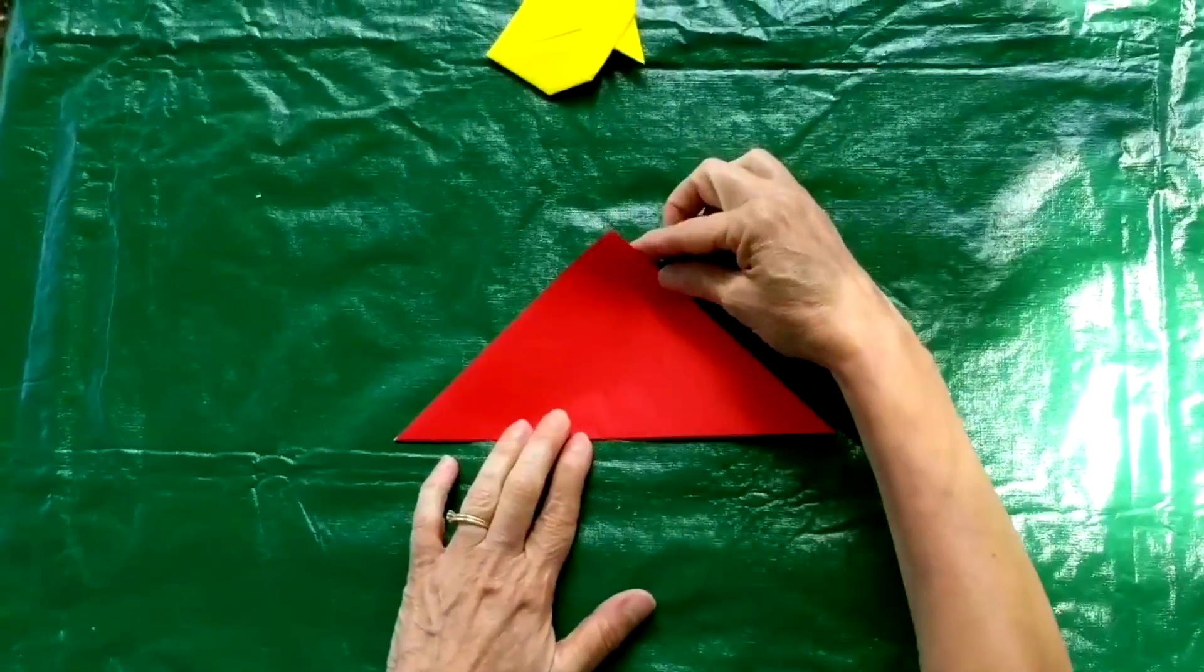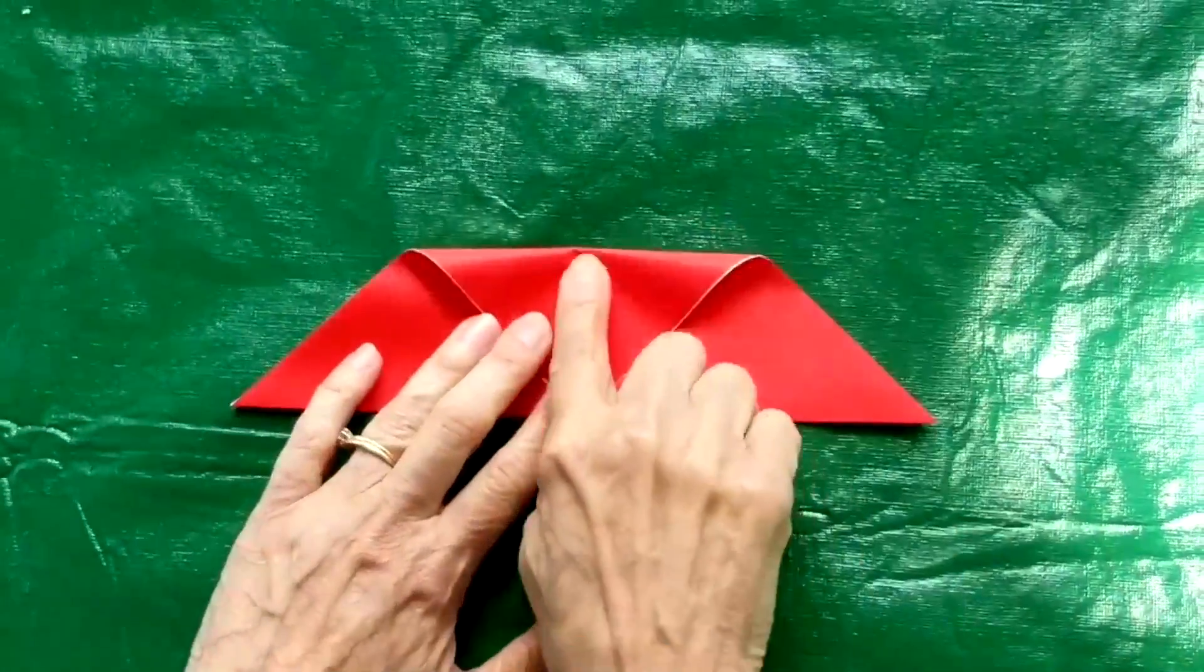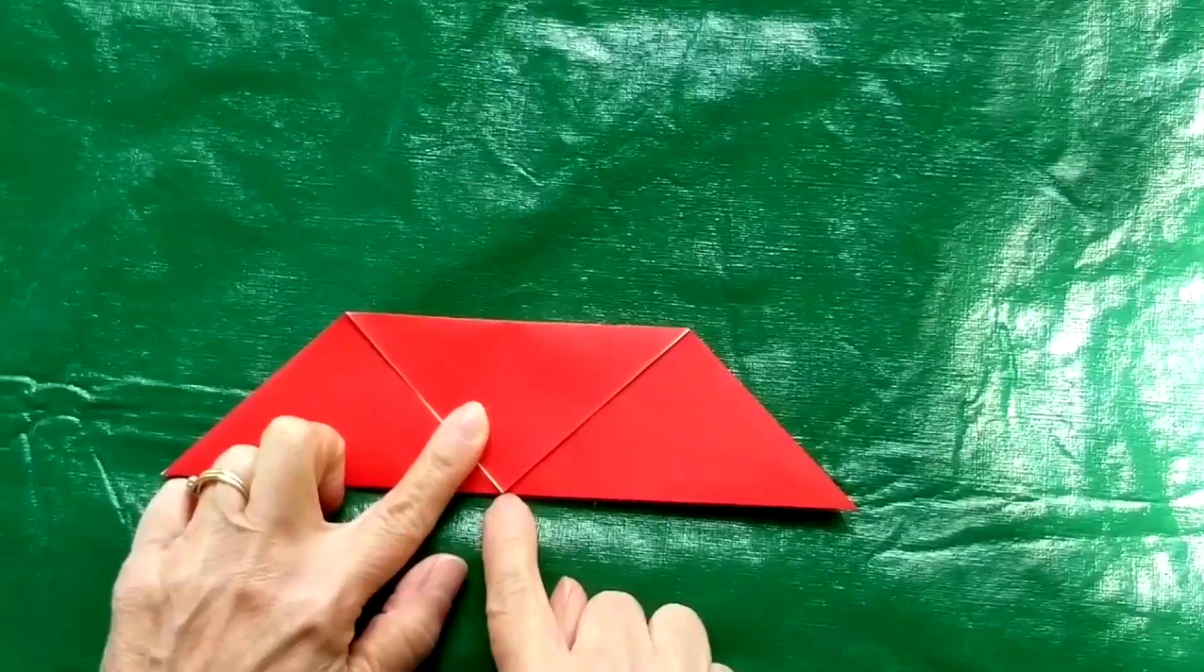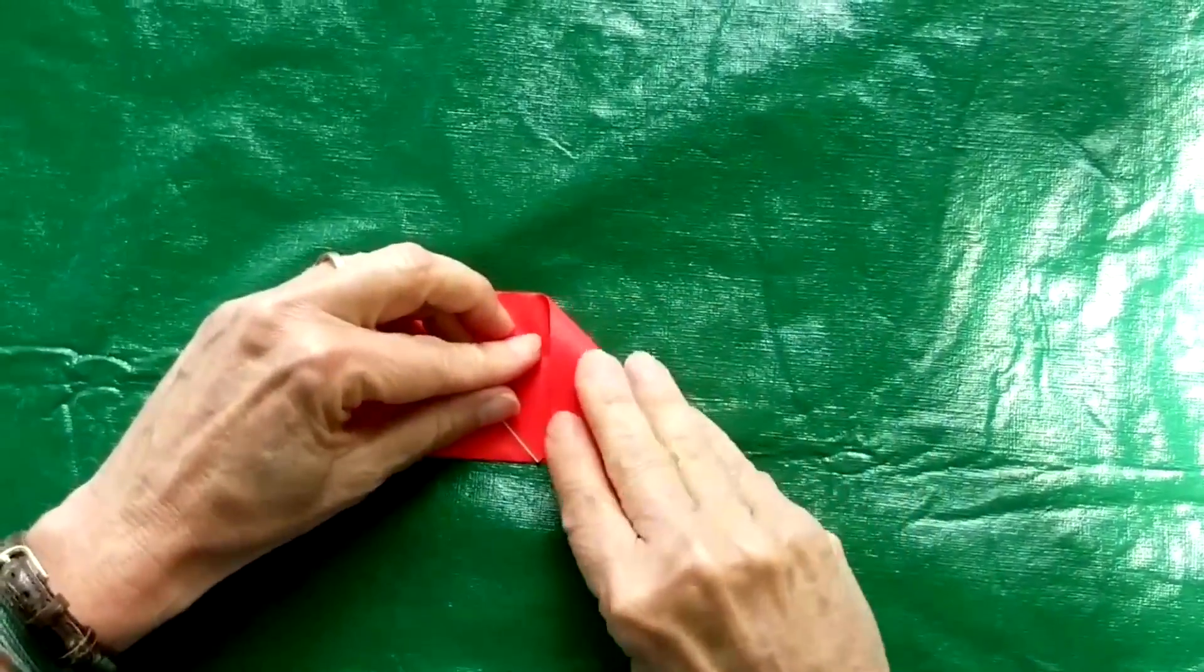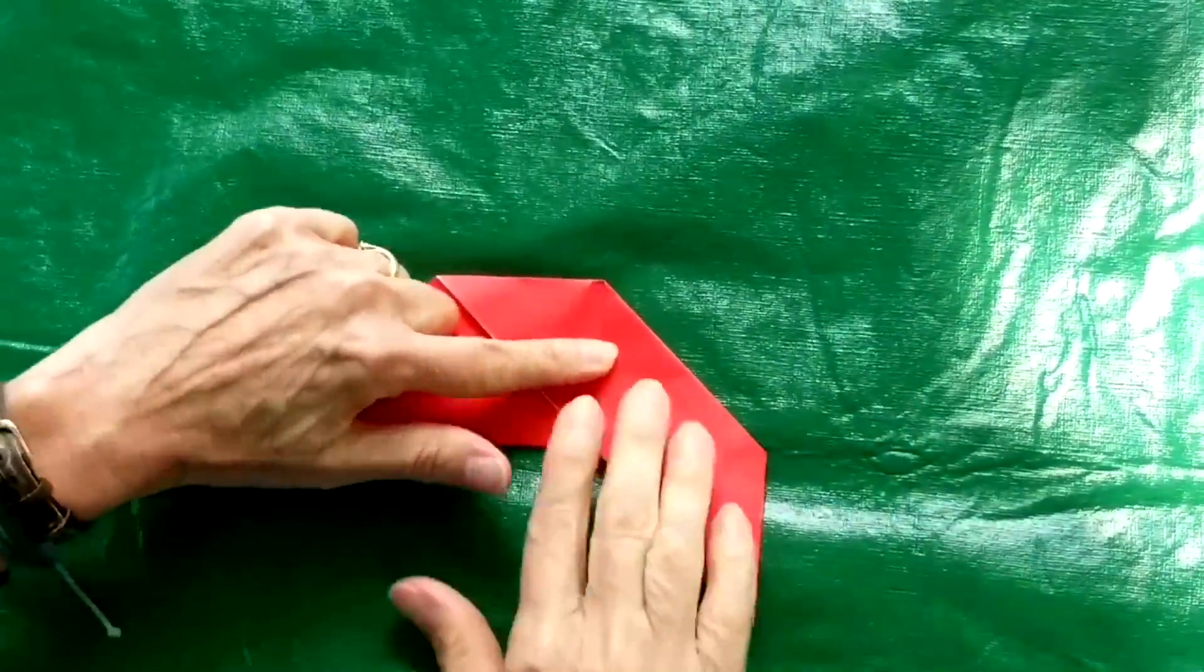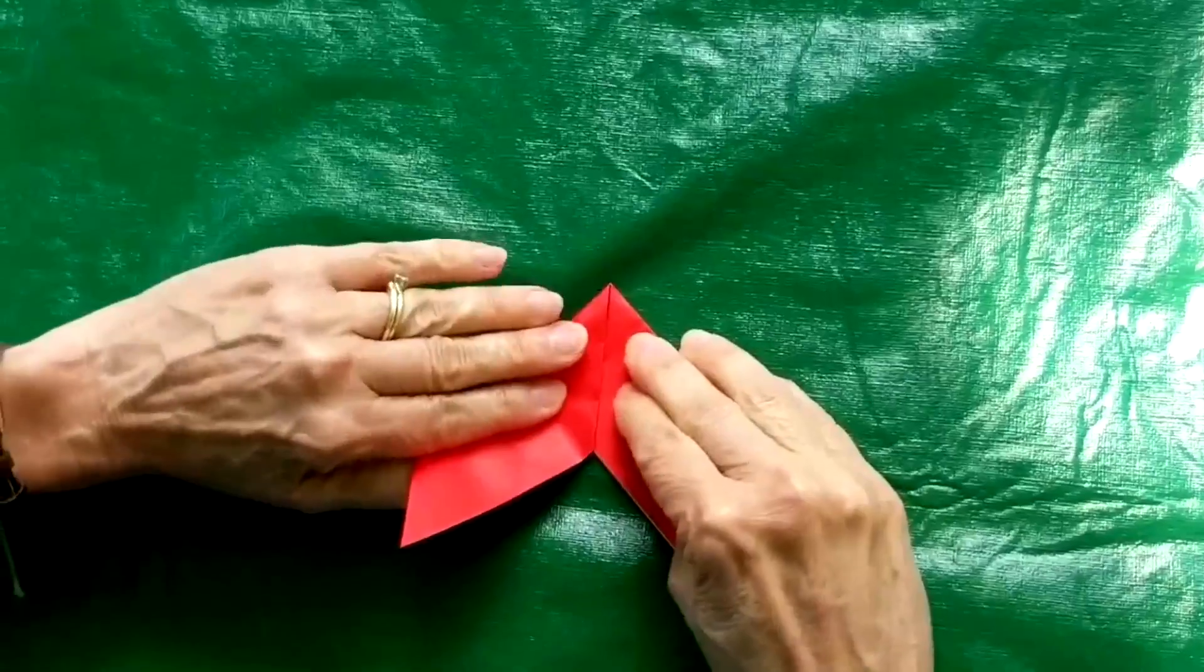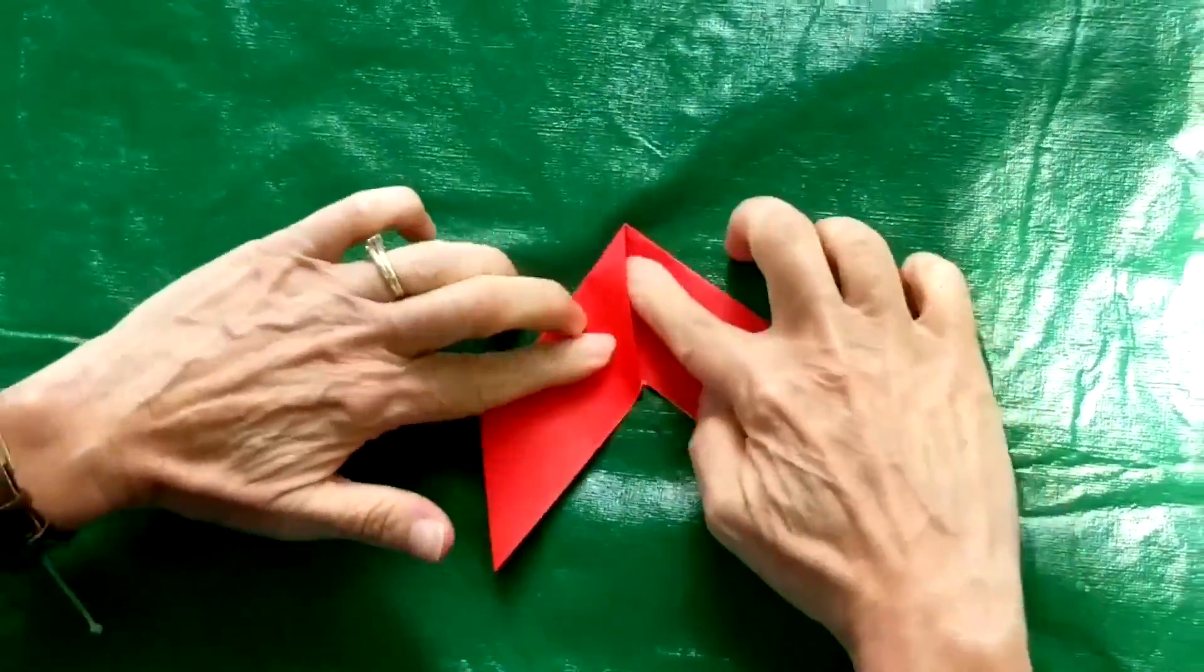From there, take the top corner and fold it down to the edge, right in the center. Now we're going to take this corner and fold it down to the center of our fold. Like that. And do the same with the opposite side. This corner comes down to the center.